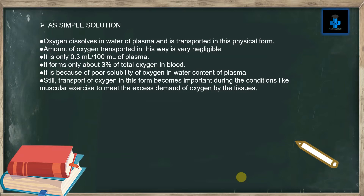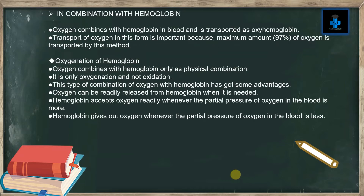Still, transport of oxygen in this form becomes important during conditions like muscular exercise to meet the excess demand of oxygen by the tissues. In combination with hemoglobin, oxygen combines with hemoglobin in blood and is transported as oxyhemoglobin.